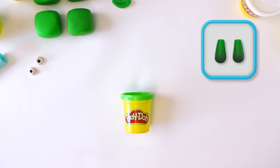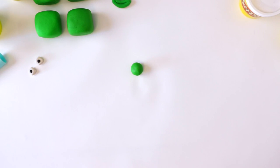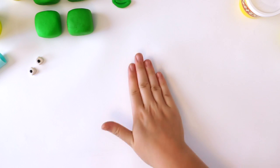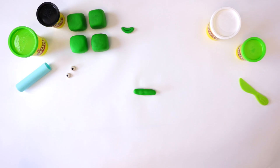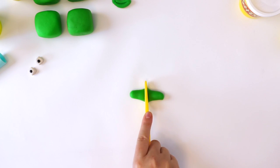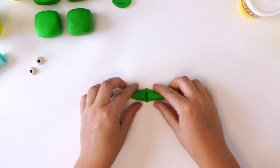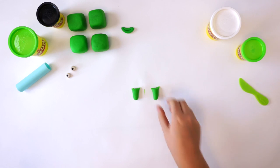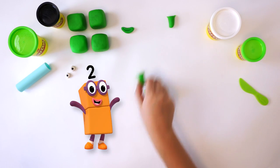Next, we need two legs. Take a medium-sized bit of green Play-Doh compound and roll it into a snake. Cut the snake in half to make two snakes. There. Two legs. One, two.